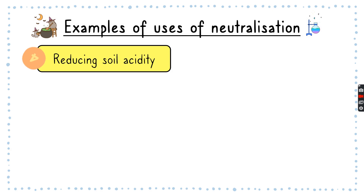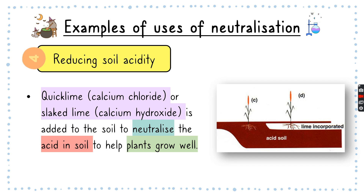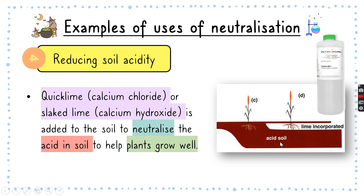The last example of neutralization is reducing soil acidity. We can use quicklime or calcium oxide, or slaked lime called calcium hydroxide, to neutralize the acid in soils so that plants can grow. You can see that the brown acidic soil — sometimes caused by pollution and acid rain — causes plants to grow much shorter. When you add quicklime to the soil, the plants grow much bigger and healthier.